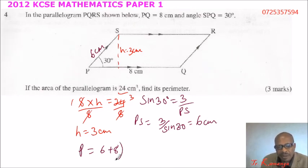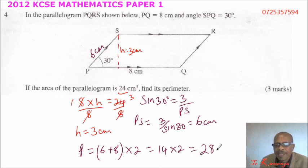You multiply by 2, and this should be 14 times 2, and that should give you 28 cm.